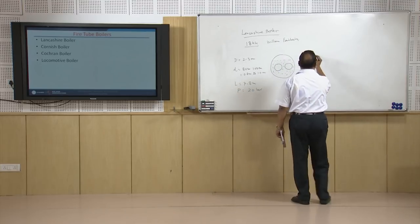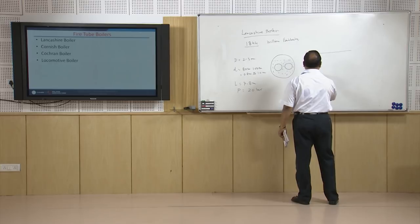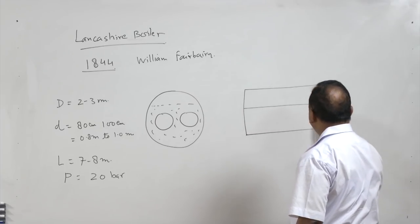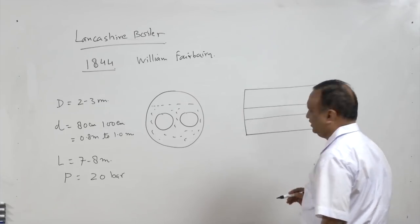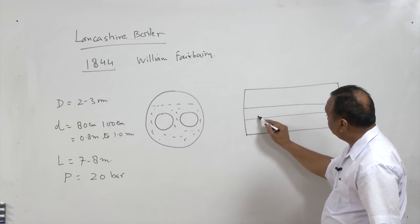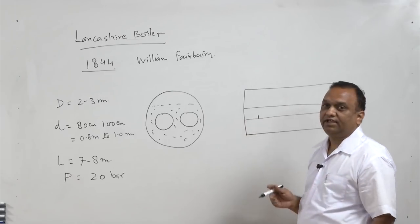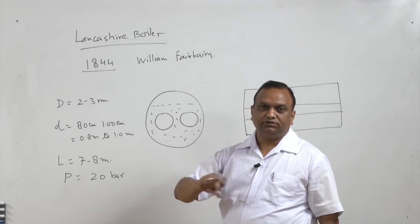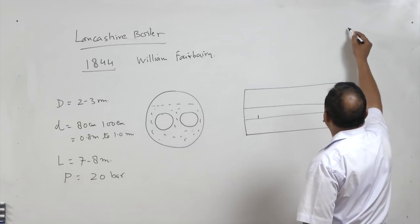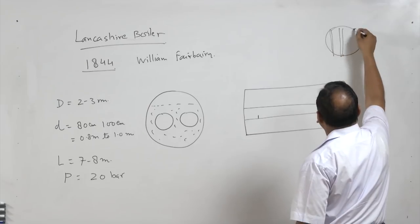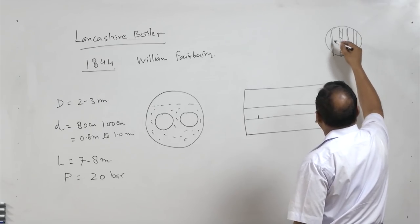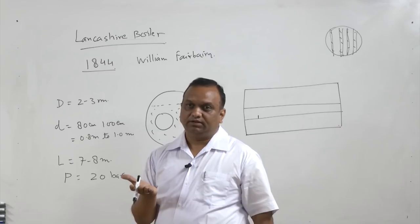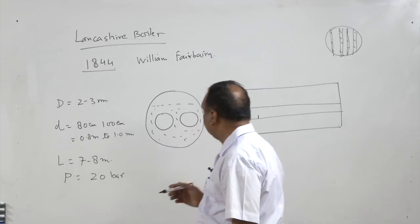If I draw the elevation of this boiler — because there are two tubes — from the elevation they will appear to be a single tube. Fuel is burned in a portion where there is a grate. A grate is a perforated platform or a platform having a number of rods, and on this platform the fuel is burned. Below the grate there is an ash pit from where the ash can be removed.